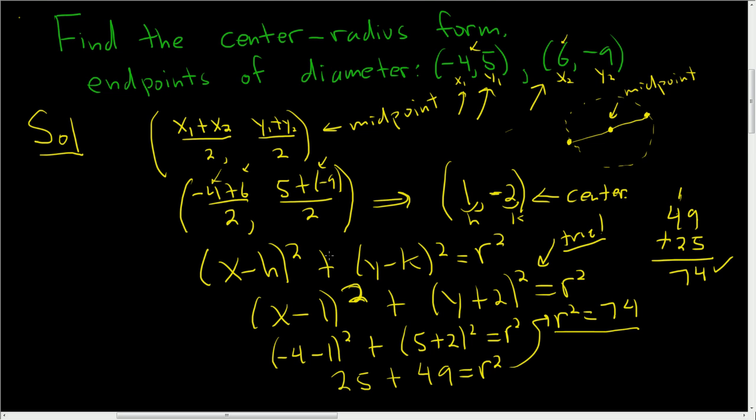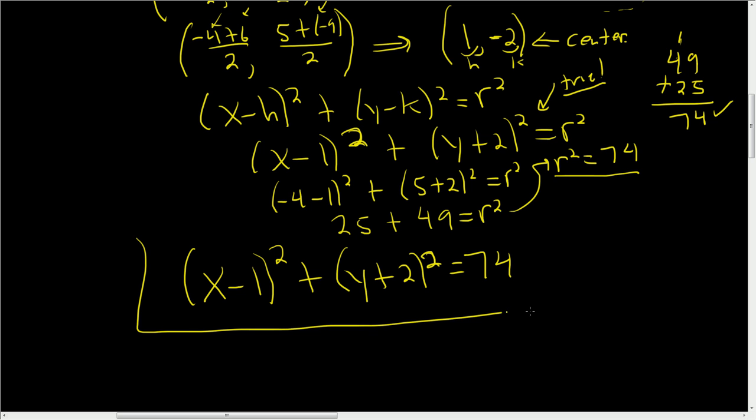Let's finish. We'll just plug in r² and we are done. So this is (x-1)² + (y+2)² = 74. Boom, there it is. There is the center-radius form of the circle, given the endpoints of the diameter. So a little bit more challenging. I hope this helps someone out there who's working on circles.